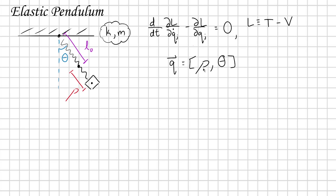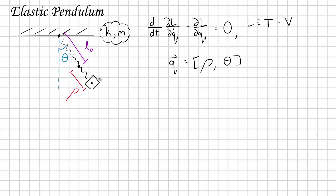This is very standard notation in Lagrangian mechanics to write out all of your coordinates and put them in a vector q. It totally makes sense that when you couple a spring and a pendulum together, you would have these two independent coordinates.